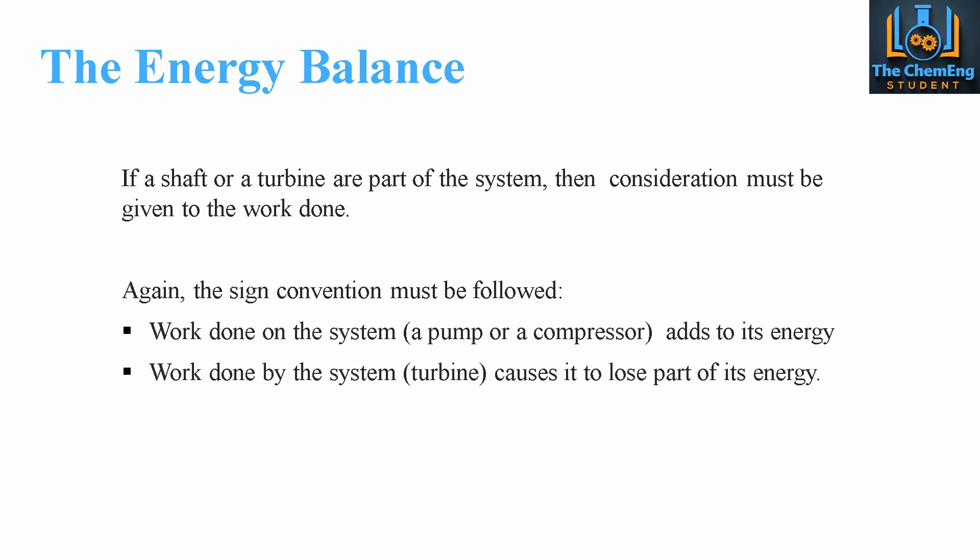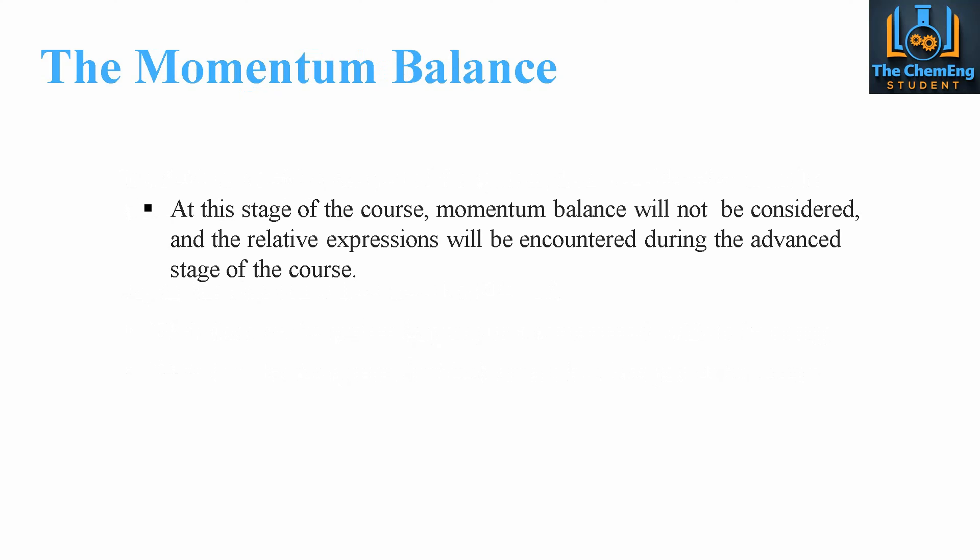If a shaft or a turbine is part of the system, we have to consider the work, and the sign convention must be followed. Work done on the system — such as a pump or compressor — adds energy. Work done by the system — such as turning a turbine — causes it to lose energy. So a pump or compressor increases the net energy value, while using the steam's energy to drive a turbine results in a negative contribution. The discrepancy in net energy can be used to work out important parameters in terms of power and electricity generation.